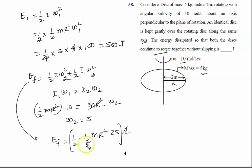So what we will calculate: it is 1 by 2, mass is 5 kilogram, radius is 2, so 2 square is 4, 4 into 25. So it is 2 to 4, 5 to 10, it is 250 joules.